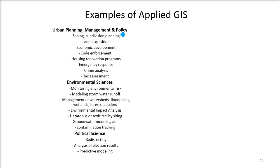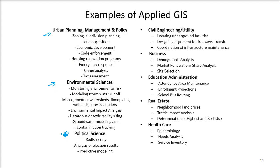So there are examples of applied GIS. We are going to talk about this — even if you go for urban planning, management and policy, you use GIS. Then we use GIS in environmental sciences, in political sciences also. Then we have the application of GIS in civil engineering and utility, in businesses, educational administration, real estate, and health care. So all these are just the tip of the iceberg. Everywhere, GIS is being used.